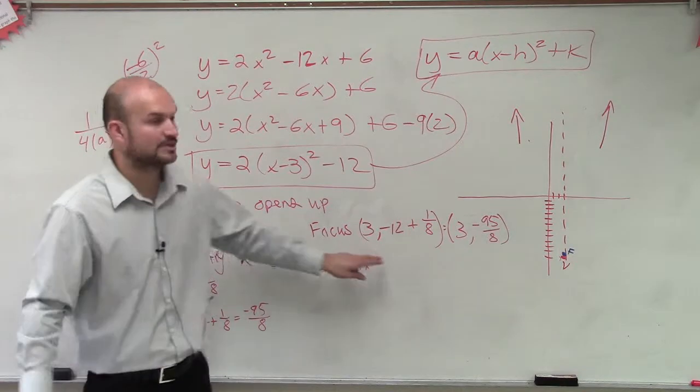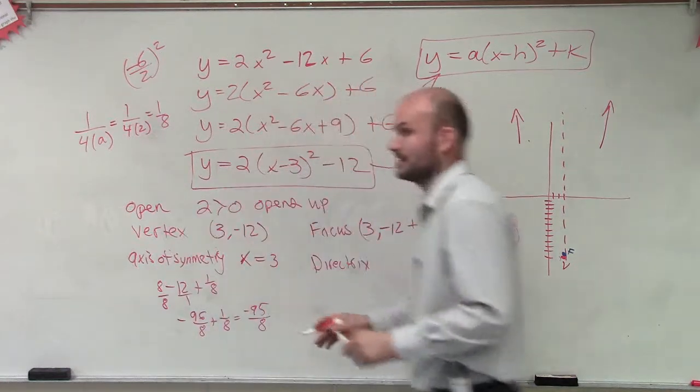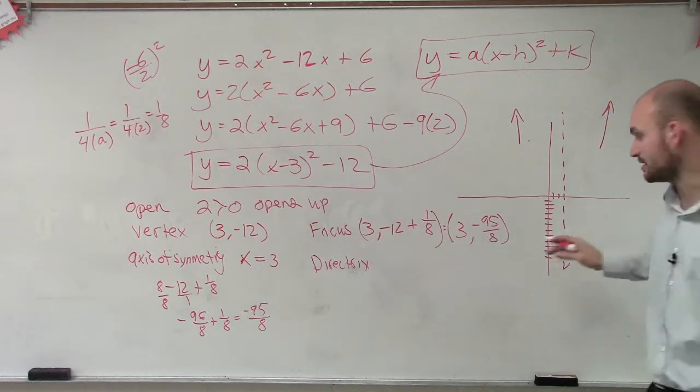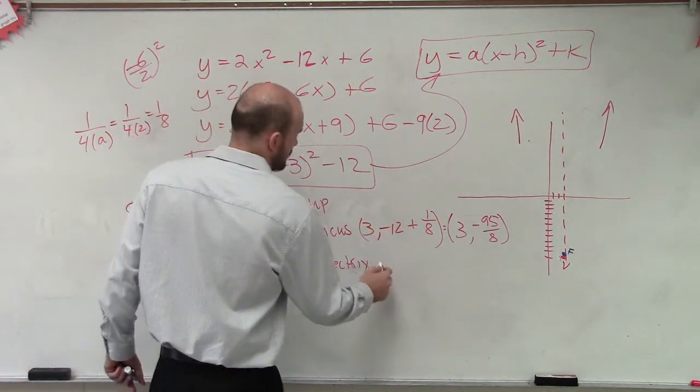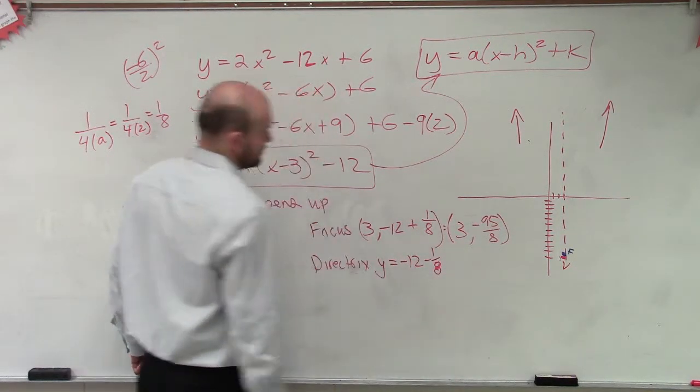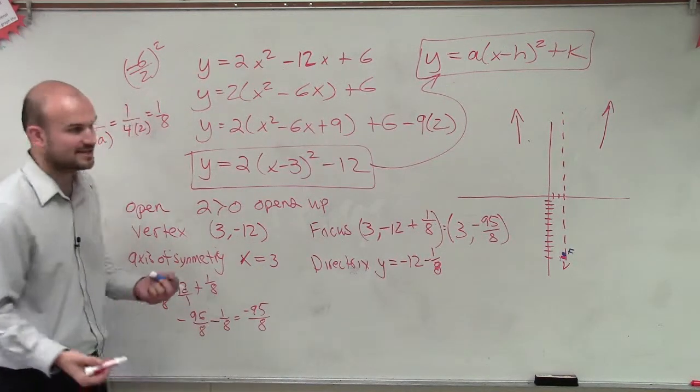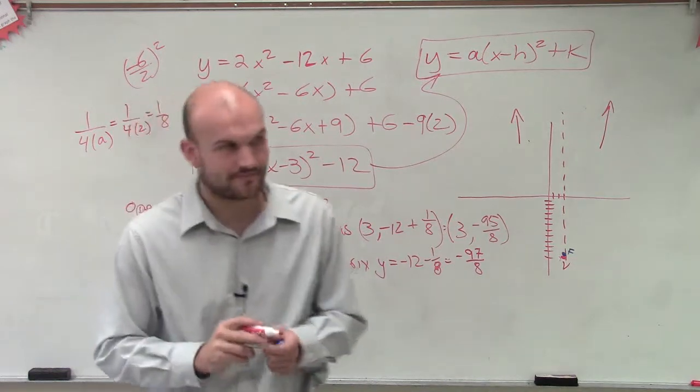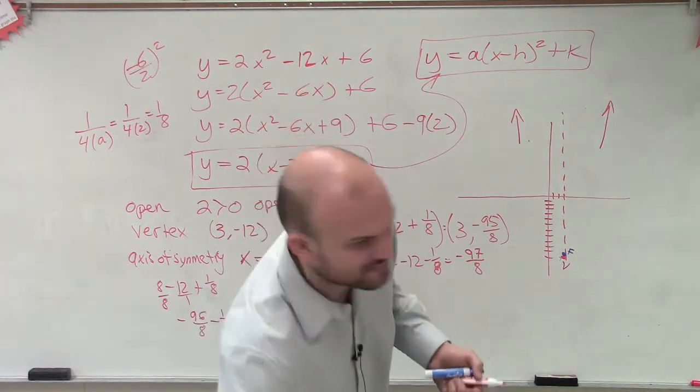So now, let's go ahead and determine what the directrix is. Now remember, the directrix, to find the directrix, we need to subtract. And our directrix, is it going to be a horizontal or a vertical line? Horizontal line, because our axis of symmetry is vertical, so the directrix is going to be horizontal. So therefore, remember, now we're going to subtract it from k. So it's going to be y equals negative 12 minus 1/8. Well, ladies and gentlemen, we're going to do the same thing. But instead of adding 1/8, now we're going to subtract it. So you can say it's going to be negative 97 over 8. Now, we approximate that negative 97 divided by 8, it's going to be negative 12.125.